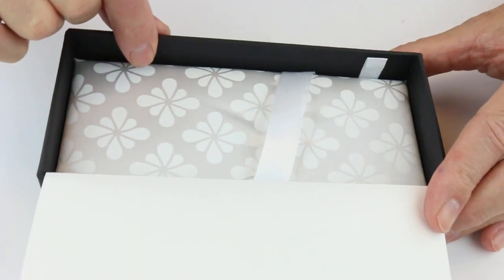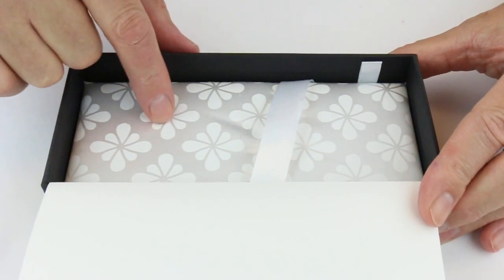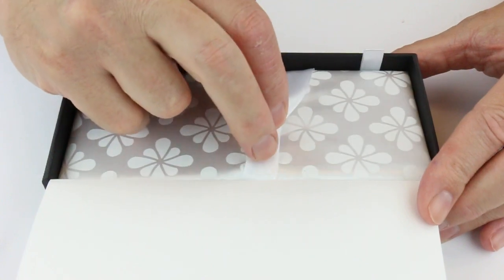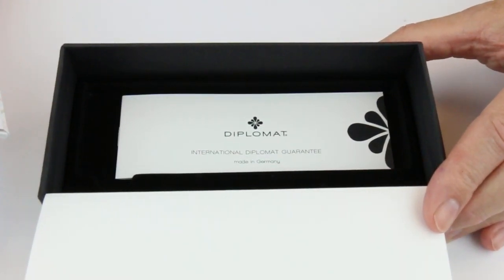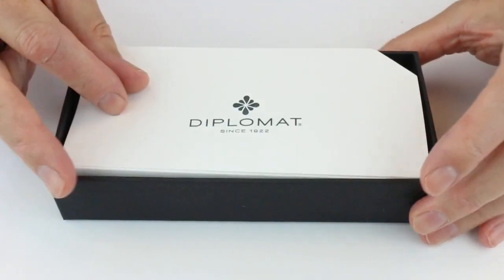Underneath the pen is a false bottom with a soft bed. You can see the Diplomat logos on that bed. That lifts off and there's information, a warranty, and materials about the pen.